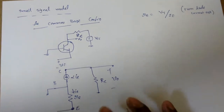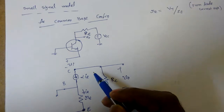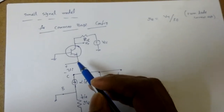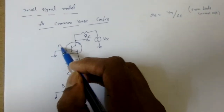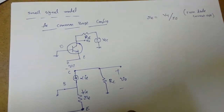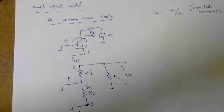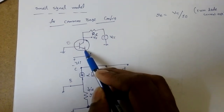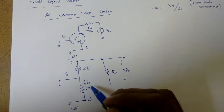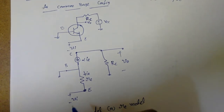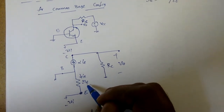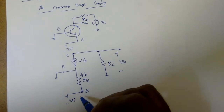In this lecture, I'm going to continue the small signal models. We will see the small signal model for common base configuration, where the base terminal is common to both the emitter and collector terminals. Previously, whenever the base-to-emitter junction is forward biased, it is represented by the base-to-emitter resistance. Since input is given to the emitter, this forward resistance at the base-to-emitter junction is called r_ac, represented as r_e.